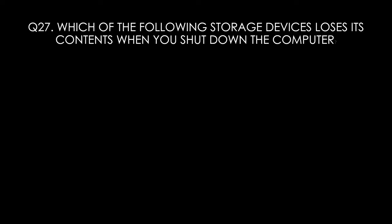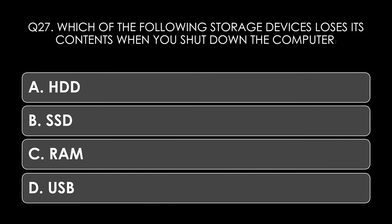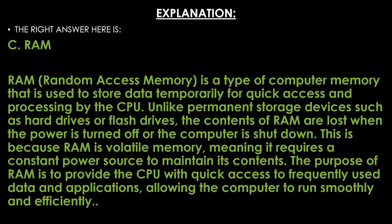Question twenty-seven. Which of the following storage devices loses its contents when you shut down the computer? Options: hard disk drive (HDD), SSD, RAM, or USB. The right answer is RAM. Random Access Memory is used to store data temporarily for quick access by the CPU. Unlike permanent storage devices such as hard drives or flash drives, the contents of RAM are lost when power is turned off because RAM is volatile memory — it requires a constant power source to maintain its content.